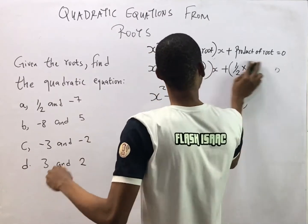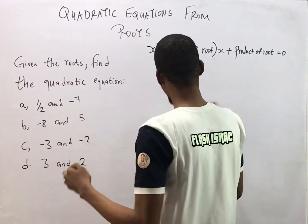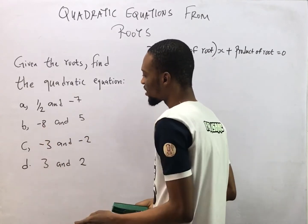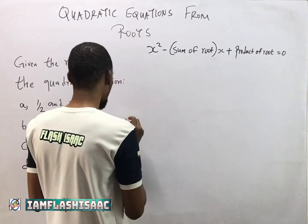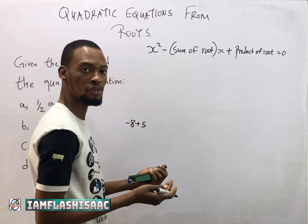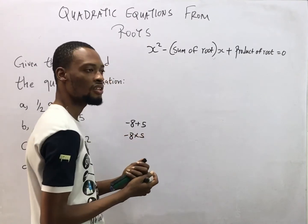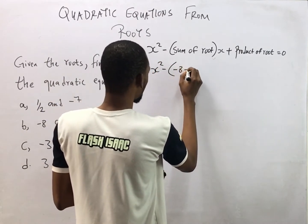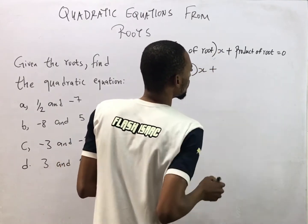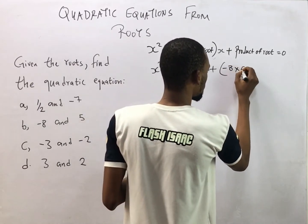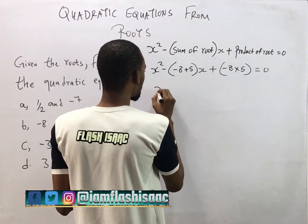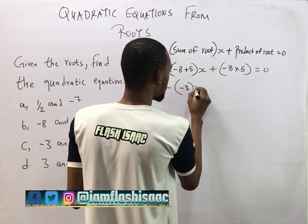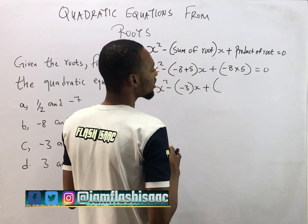For the next question, we are finding the quadratic equation whose roots are -8 and 5. The sum of roots is -8 + 5, and the product of roots is -8 × 5. Substituting into the formula: s² minus (-8 + 5)s plus (-8 × 5) equals zero.